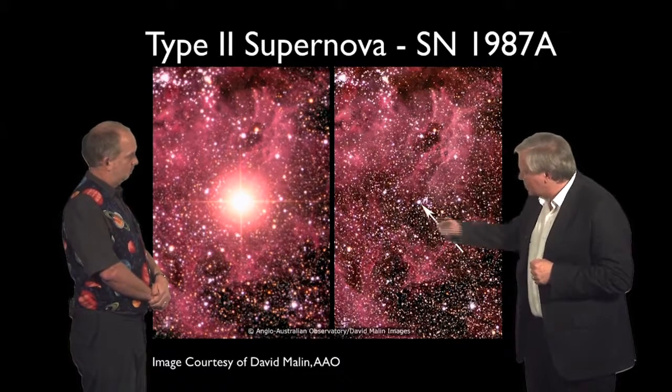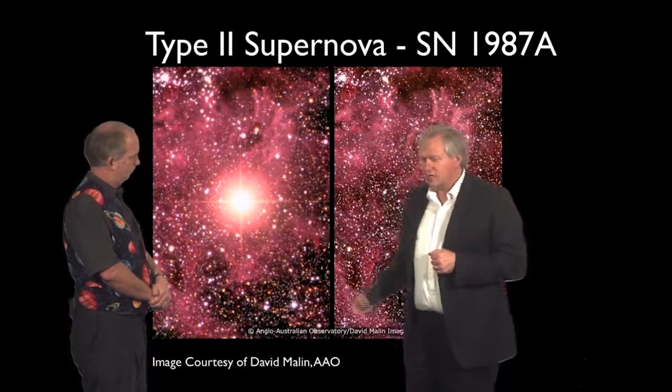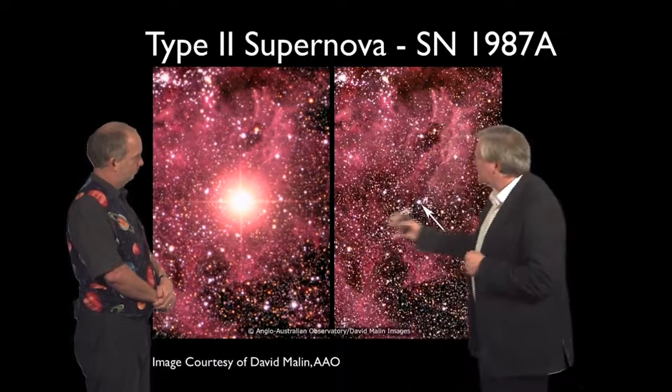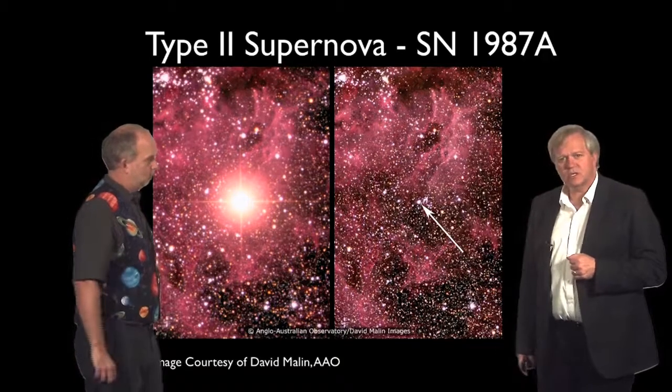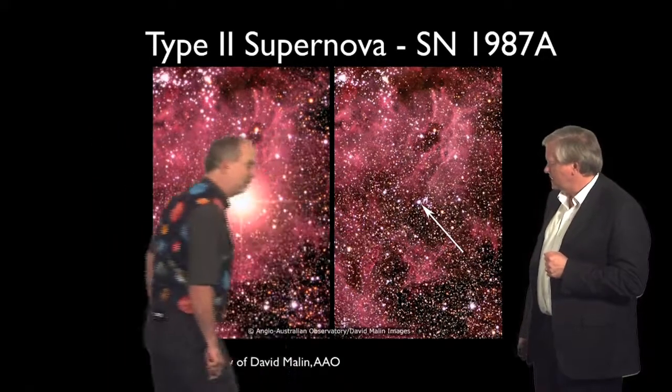Before supernova 1987A exploded, you can see there's a little star there. And then here in February 1987, we see something that's incredibly bright, tens to hundreds of millions of times brighter than the star that apparently exploded. So it looks like that's the star that went bang. It is.